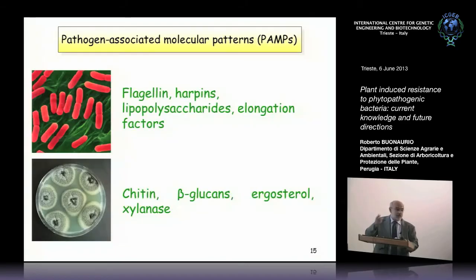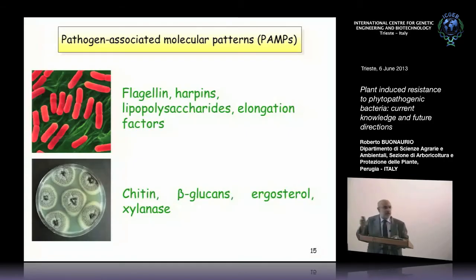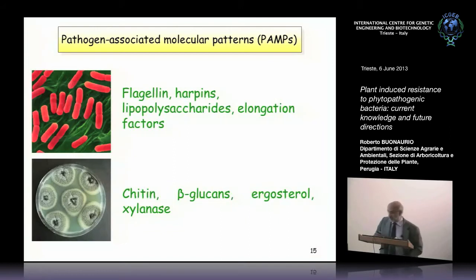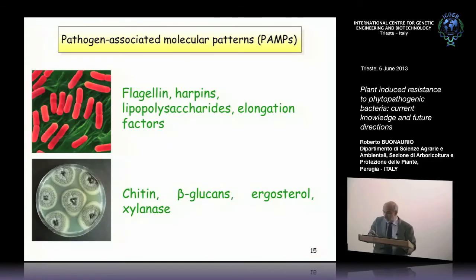Through the type III secretion system, the bacterium injects into the plant a cocktail of effectors. Harpins are involved in the formation of the translocon, a protein able to integrate into the plasma membrane of the plant. Other PAMPs include lipopolysaccharide, elongation factor, and many other compounds. For fungi, PAMPs include chitin, a component of the fungal cell wall, beta-glucans, ergosterol, and xylanase, for example.